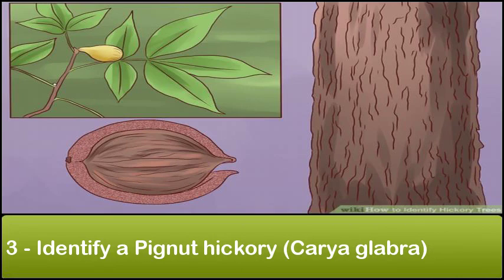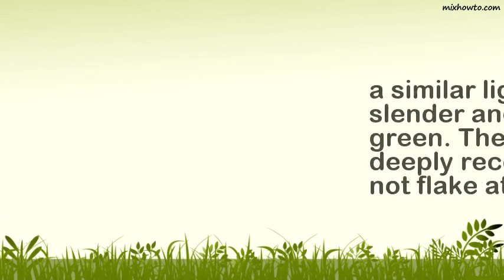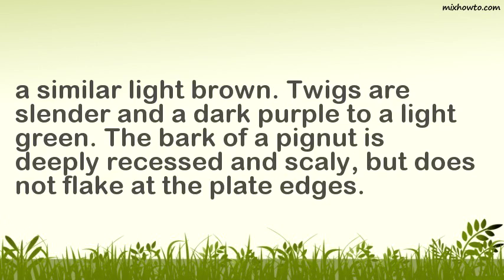Step 3: Identify a Pignut Hickory (Carya glabra). Pignut hickory trees grow on broad ridges. Their leaves consist of five sharply pointed, serrated-edged, dark green and shiny leaflets on a short rachis. The thin pignut husk is light brown, and the round fruit — which grows to be about 1 inch (2.5 cm) long by 0.8 inch (2 cm) wide — is a similar light brown. Twigs are slender and dark purple to light green. The bark of a pignut is deeply recessed and scaly, but does not flake at the plate edges.